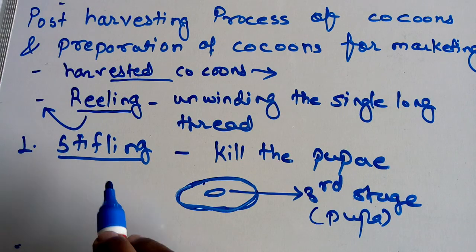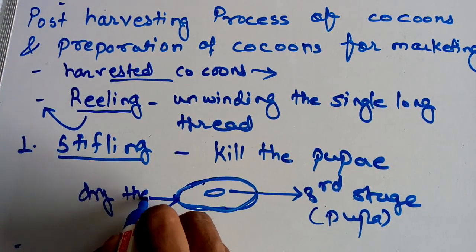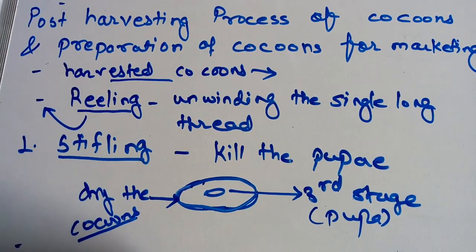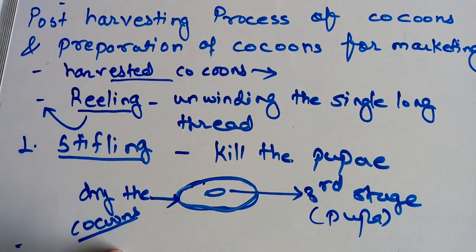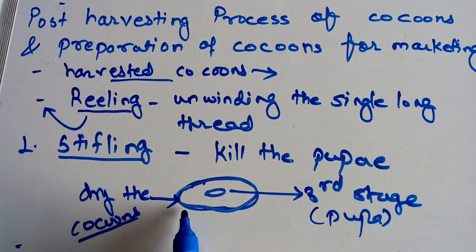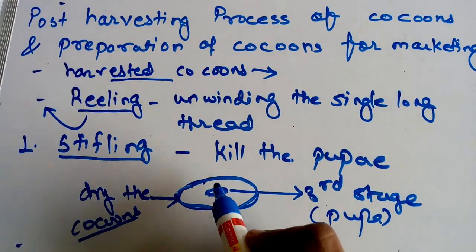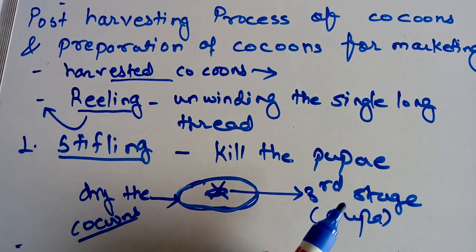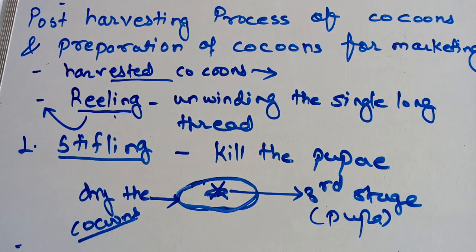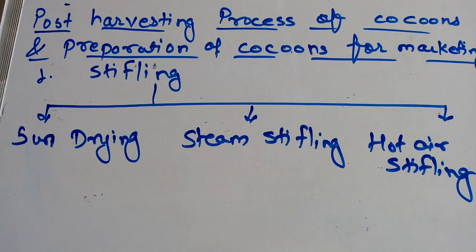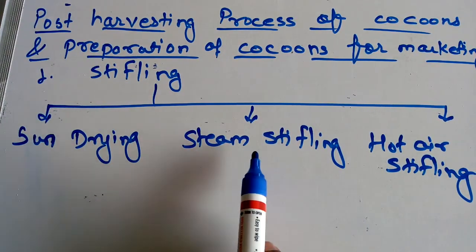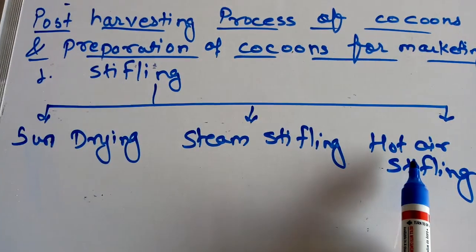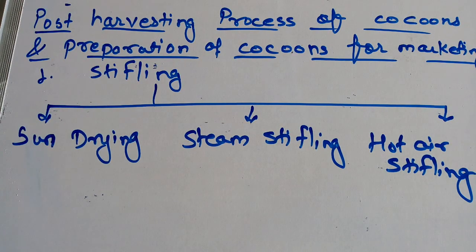In the process of stippling we dry the cocoons. There are different methods to dry the cocoon, and when we dry the cocoon the pupa present inside dies, and such cocoons are used for the process of reeling. There are three different methods of stippling: the first method is known as the sun drying method, the second is the steam stippling method, and the third is the hot air stippling method.